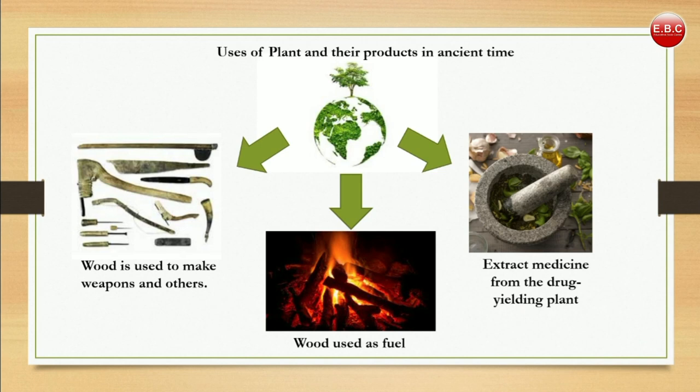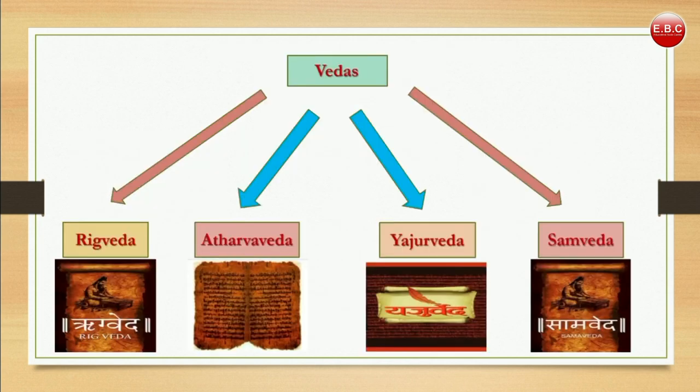Humans have used plants and their products according to their requirements. As we can see here, the uses of plants in ancient times include extracting medicine from drug-yielding plants, using wood as fuel, and also using plants to make weapons and other items.